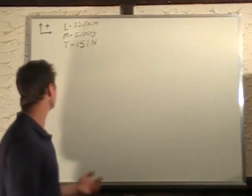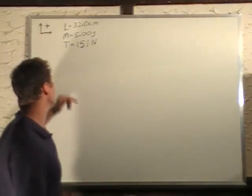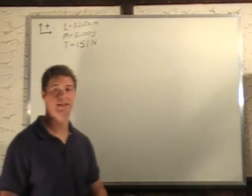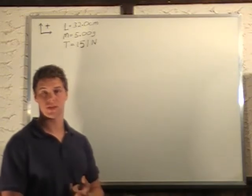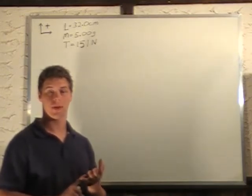In this problem, we have a guitar string that has a length of 32 centimeters, a mass of 5 grams, and a tension of 151 newtons. And what we're asked to find is the fundamental frequency and the first, second, and third harmonics.